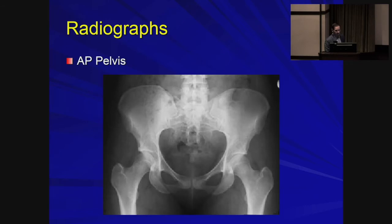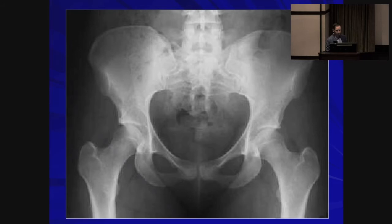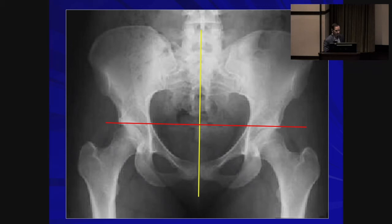For pelvic fractures, the workhorse imaging is the AP pelvis. What we're looking for is symmetry. A good technique is to drop a plumb line aligning the spinous processes through the symphysis as an axis, then draw perpendicular lines and check that landmarks on each side line up — such as the dome of both acetabula and the teardrop — confirming no migration of the pelvic wing.